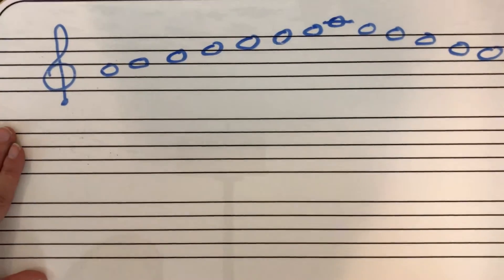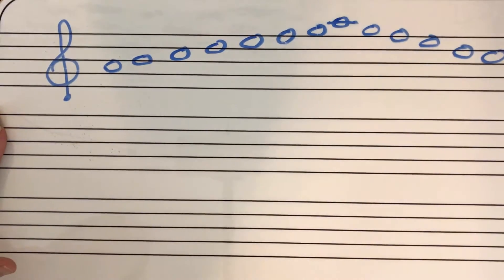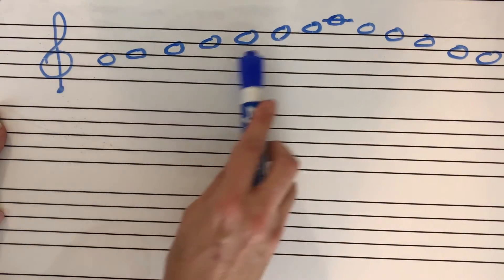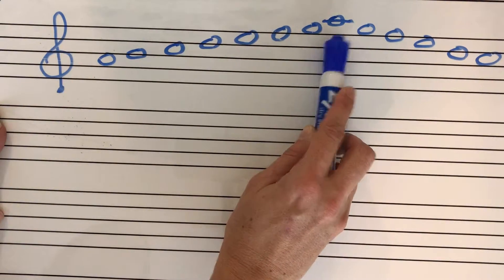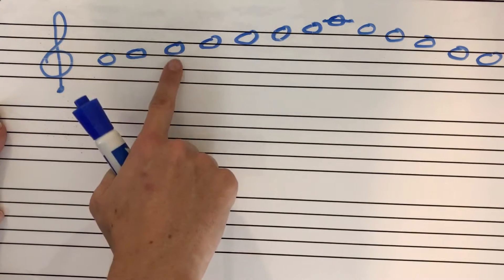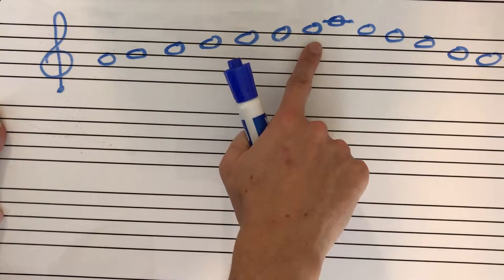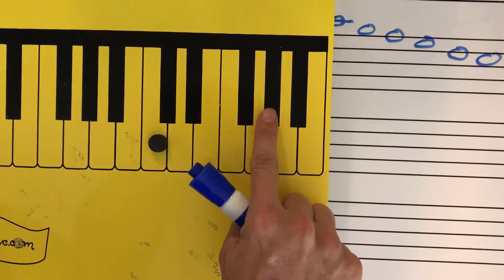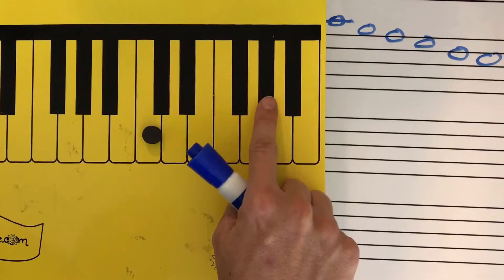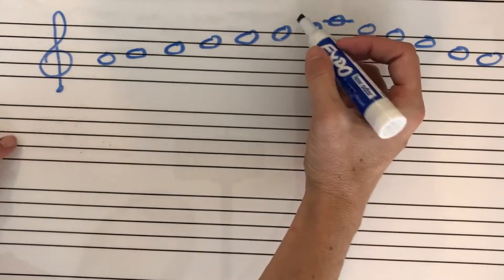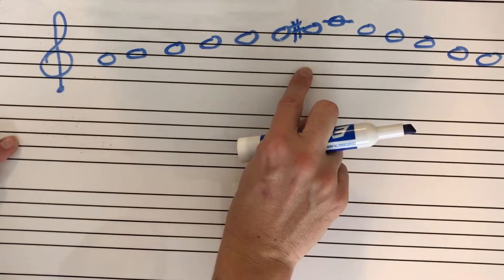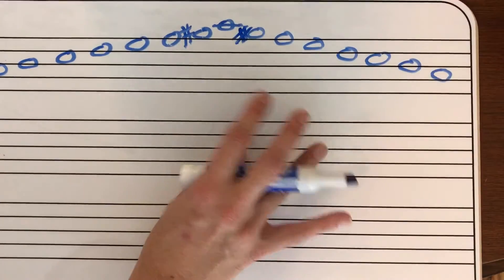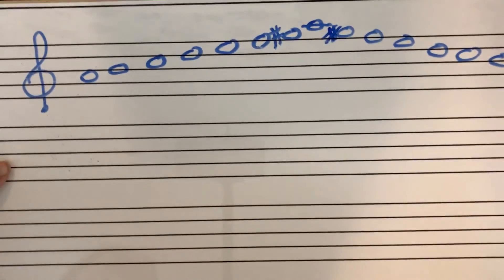Now, do you remember what we do for the harmonic minor scale? We raise the seventh note of the scale. What's the seventh note? If you said G, you're correct: one, two, three, four, five, six, seven. To raise G a half step, that gives us G sharp. So all I need to do to turn this into a harmonic minor scale is put a sharp in front of my G — and again on the way down. That gives us the harmonic minor scale with the seventh note raised.